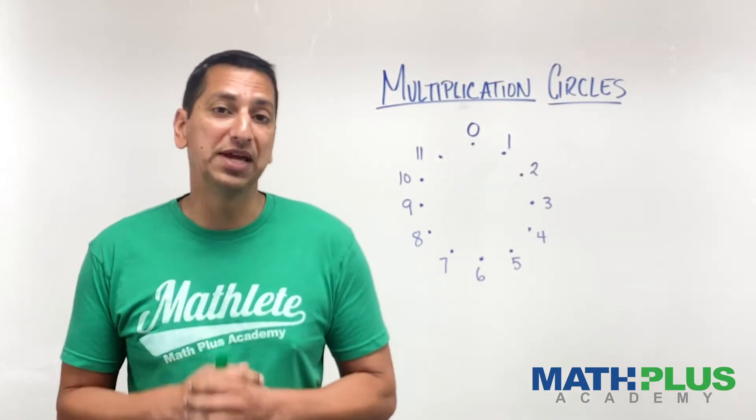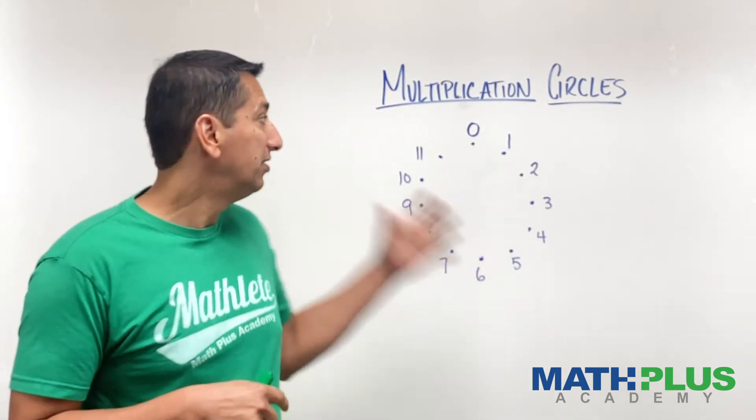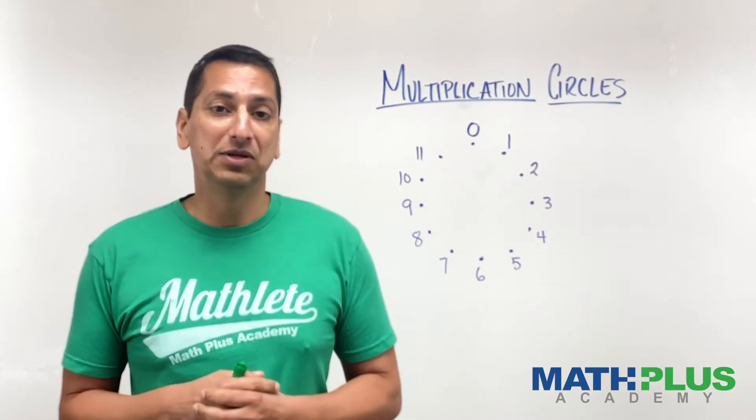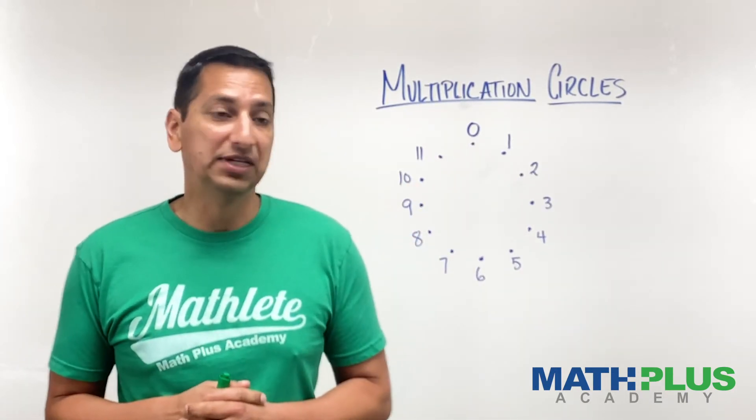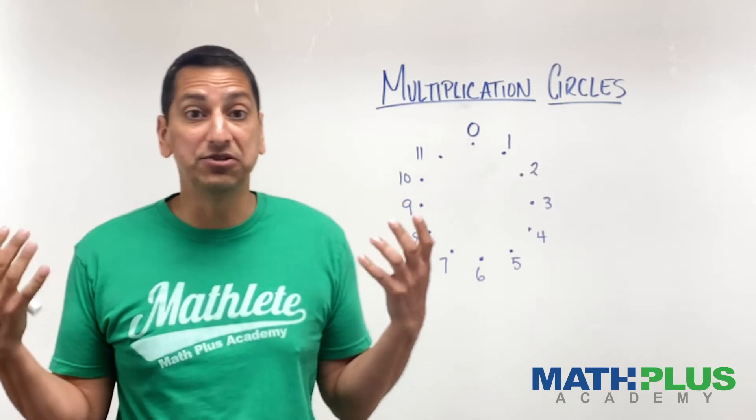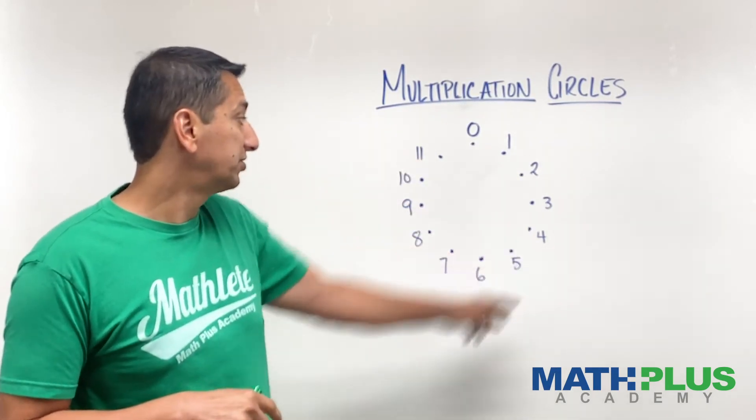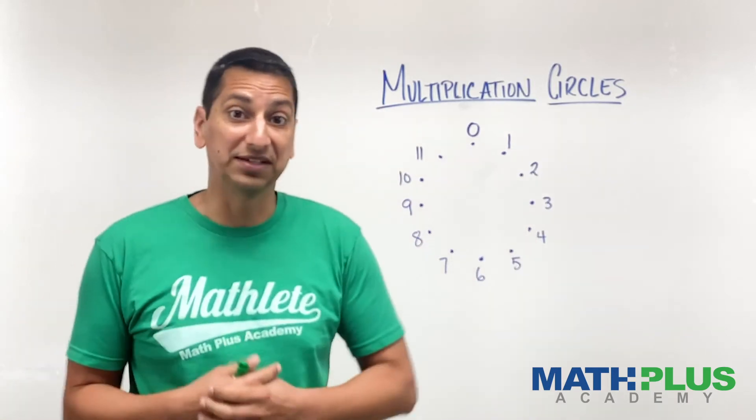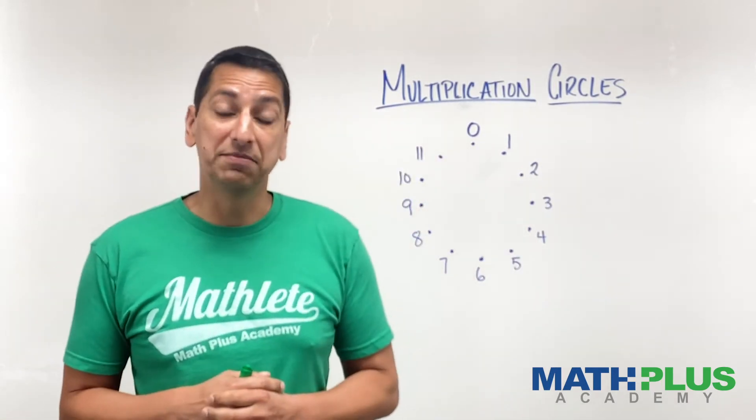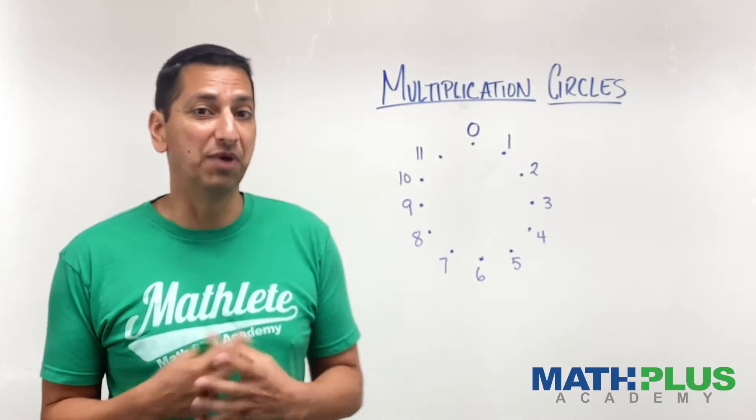And what we're going to do is represent our multiplication table through lines and connecting points on this circle. So here I've just chosen, I can choose any number I want. In this case, I'm going to choose 12. And I've drawn a circle with 12 dots, kind of looks like a clock, except that I've chosen to label the first one 0 instead of 12.